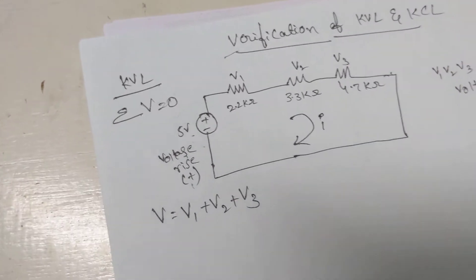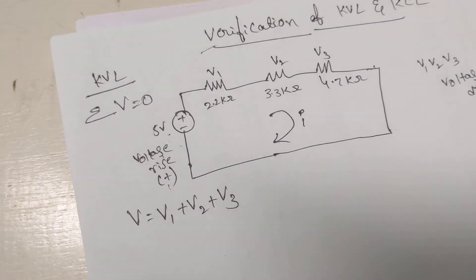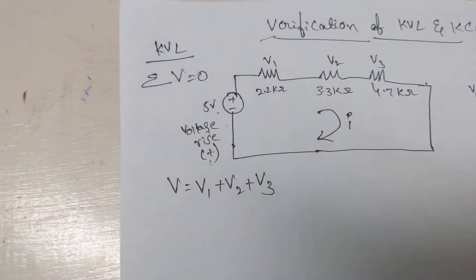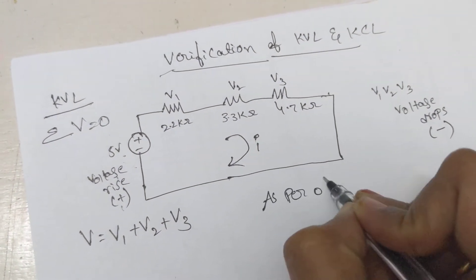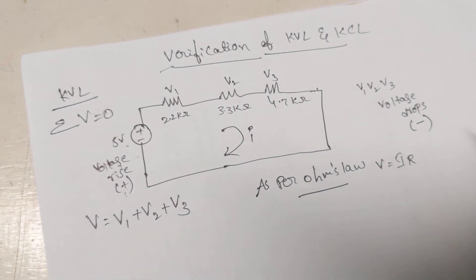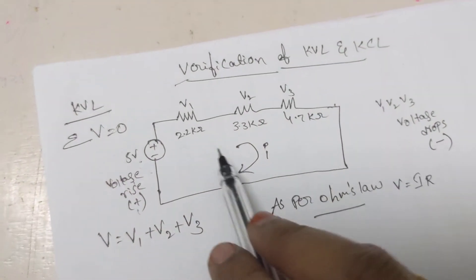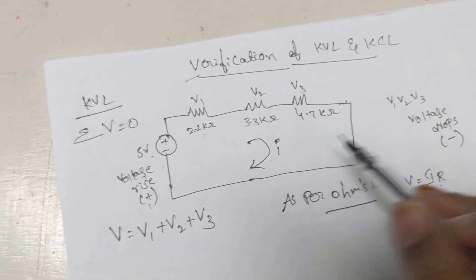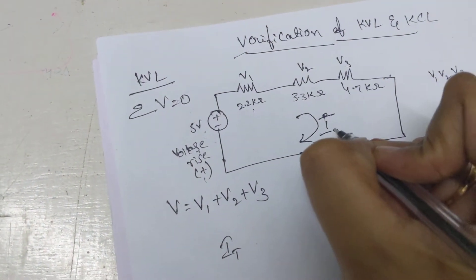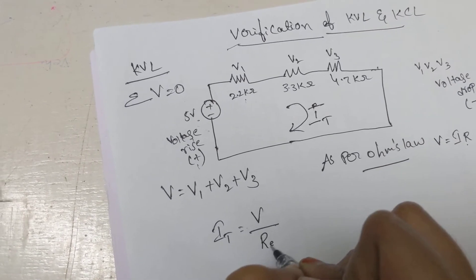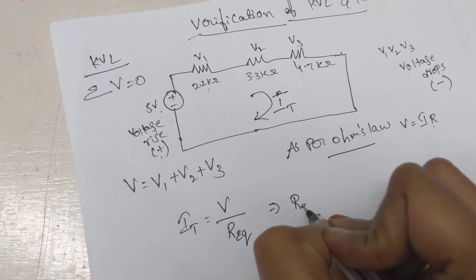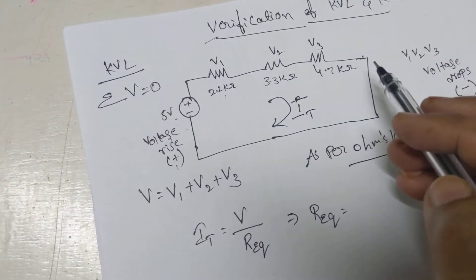Before finding V1, V2, V3, we need to find out the current in the circuit. I know V is directly 5 volts, but I don't know V1, V2, or V3. As per Ohm's law, voltage equals current into resistance. I know the resistor values but not the current. So I need to find the total current: I = V divided by R equivalent.